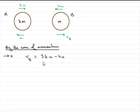Now in the previous part of the question we found that the velocity of B in terms of K and U was 3KU minus 4U.